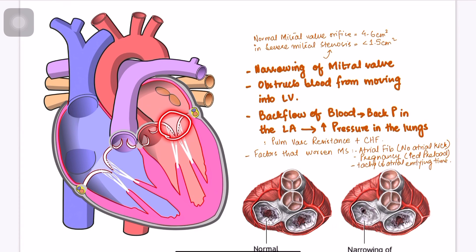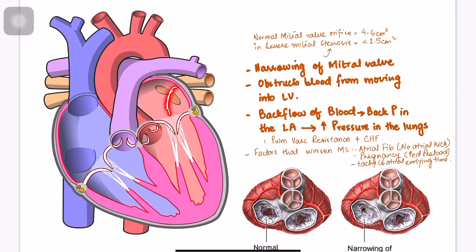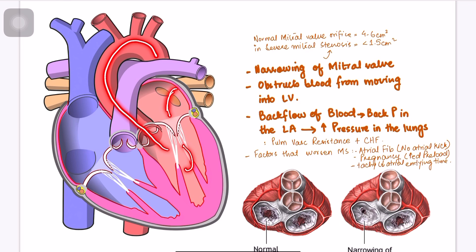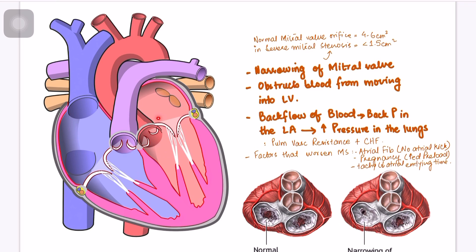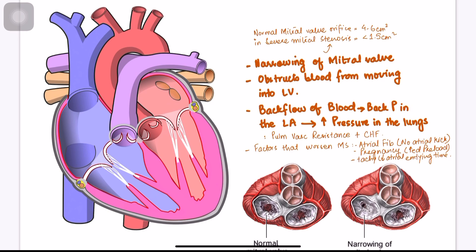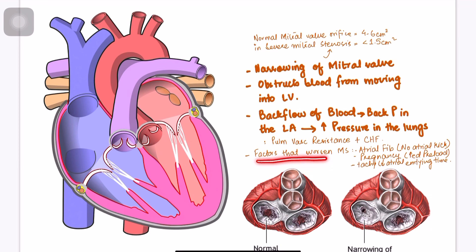When this valve is stenosed, there is going to be impedance in the flow from the left atrium into the left ventricle and consequently into the rest of the body. It is also going to result in backflow of blood into the lungs, leading to pulmonary vascular resistance and consequently congestive heart failure.